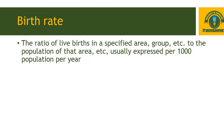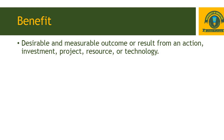Number 3 from letter B is Birth Rate. The ratio of live births in a specified area or group to the population of that area, usually expressed per 1000 population per year, is called birth rate. Number 4 is Benefit. A desirable and measurable outcome or result from an action, investment, project, resource, or technology is called benefit. If it is desirable and measurable, it means that the action was a deliberate one.